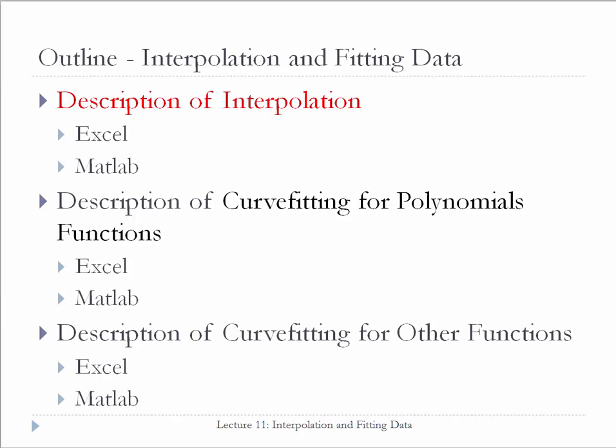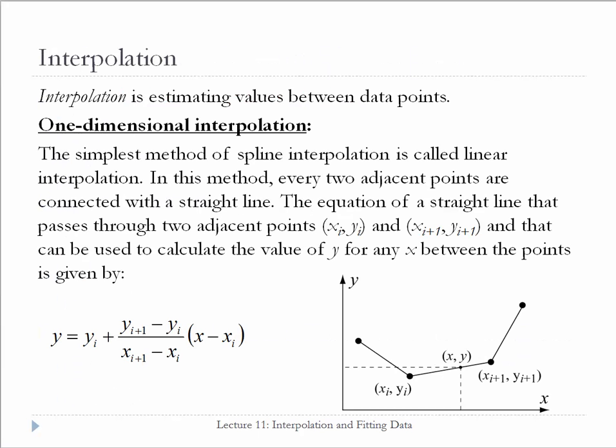Let's start with a brief description of interpolation. Interpolation is a method of constructing new data points within the range of a discrete set of known data points. One-dimensional interpolation is a method where two adjacent points are connected with a straight line. The equation of a straight line can be used to calculate the values of y for any x between the given points.